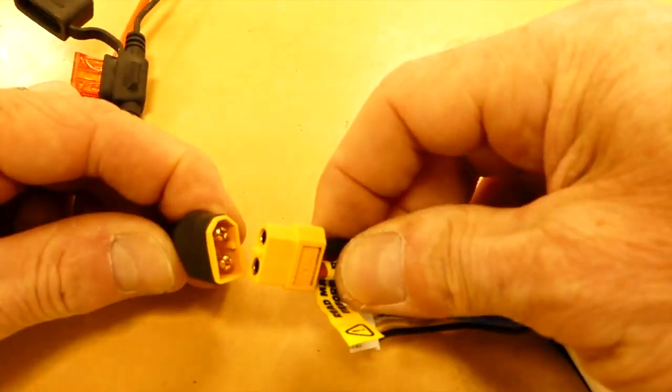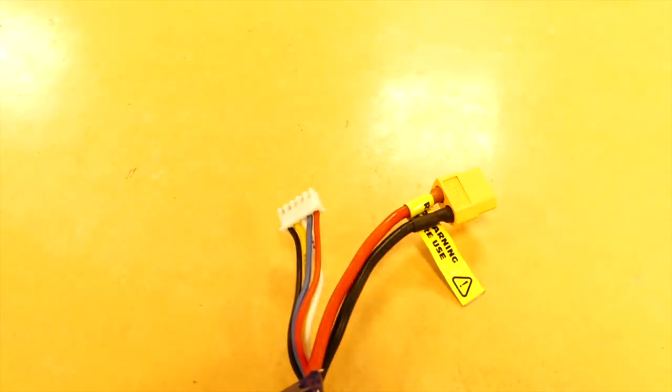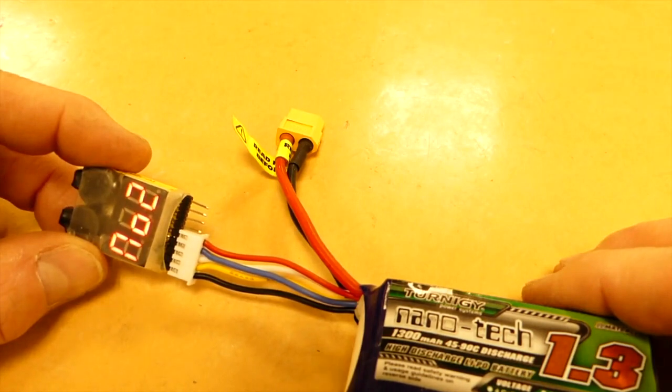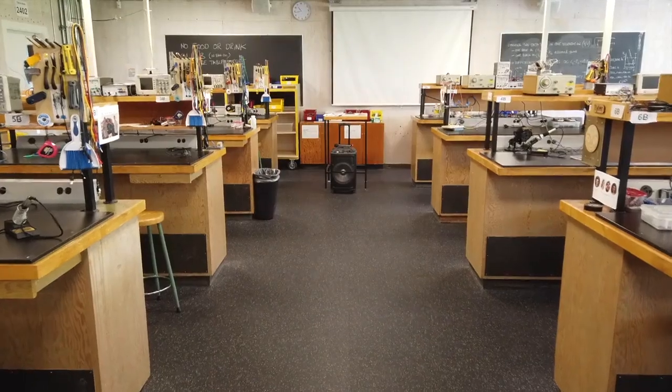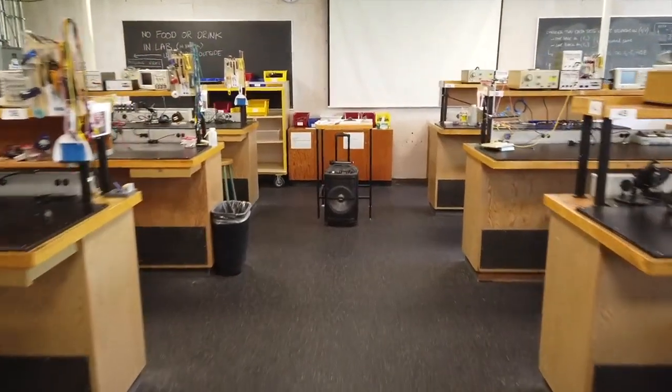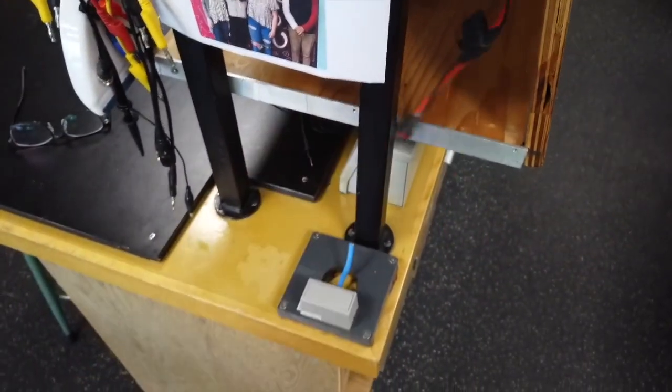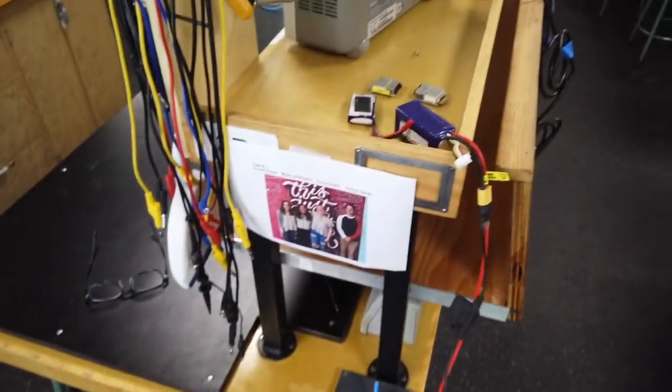Always unplug everything when you're done using the battery. If you forget to unplug the voltage alarm, it will kill the battery by draining it completely empty. At the end of the day, after unplugging everything, please put all your batteries on top of the shelf of your workbench. Put it right here so all batteries can be easily seen by us when we walk up and down the middle aisle.